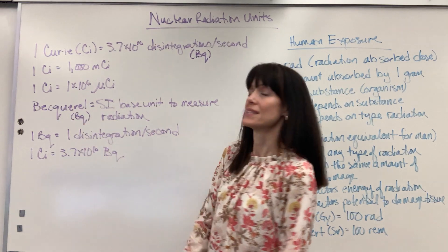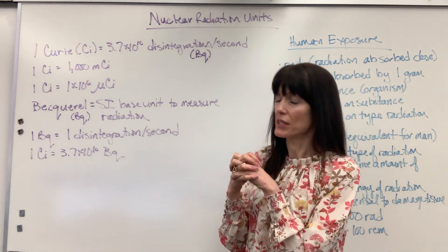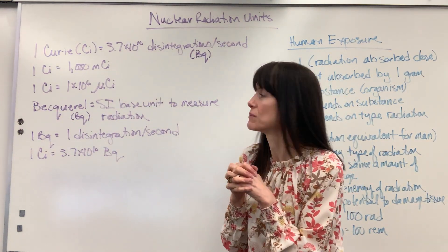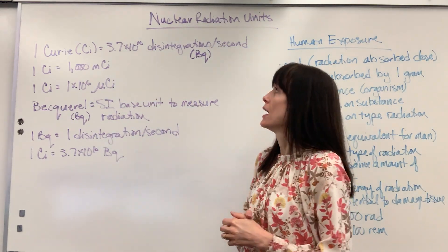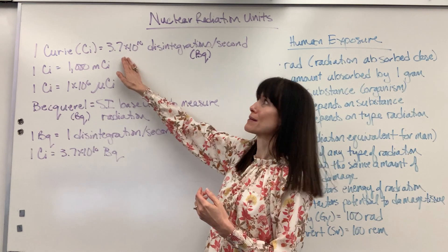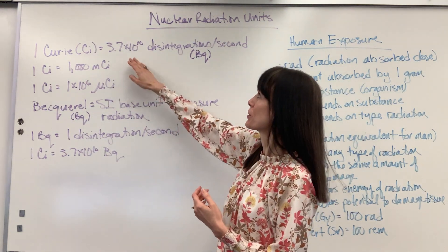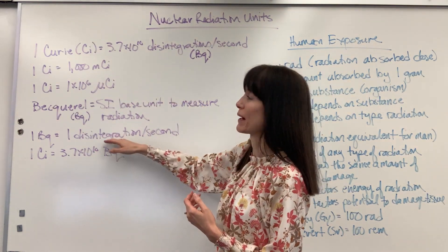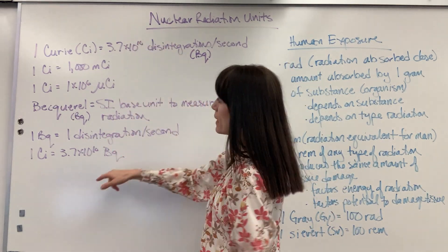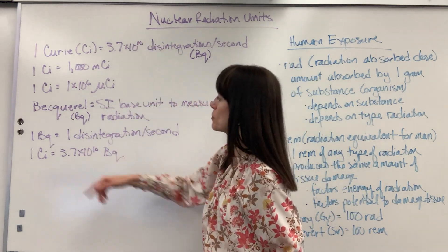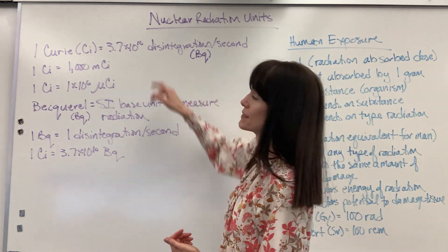A becquerel is the SI base unit for our measurement of radiation, and it's tiny — really, really small. One becquerel is one disintegration per second. Remember, a curie is 3.7 times 10 to the 10 — that's 10 billion! So one curie is 10 billion disintegrations, and one becquerel is one disintegration. Marrying these two together: one curie equals 3.7 times 10 to the 10 becquerels, because one becquerel is one disintegration per second.